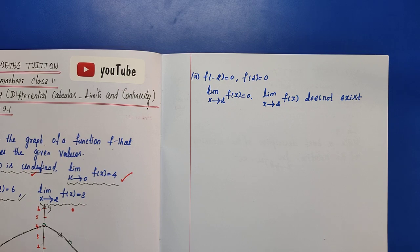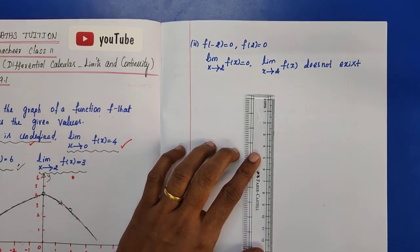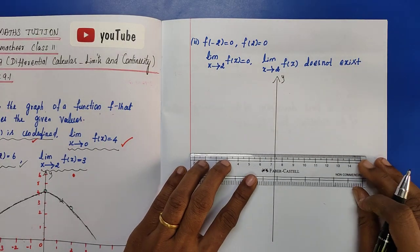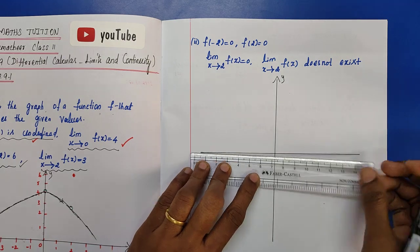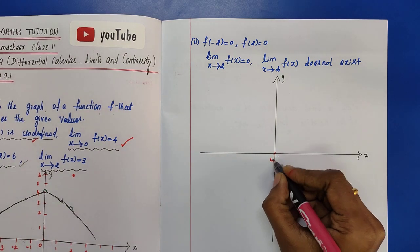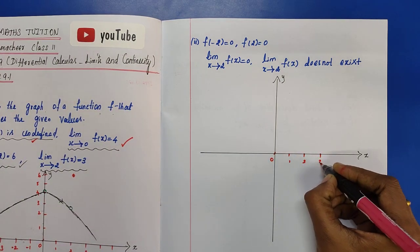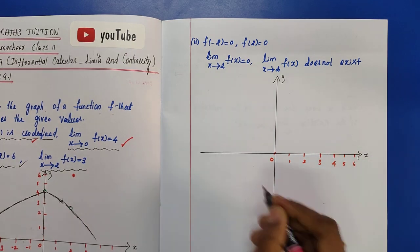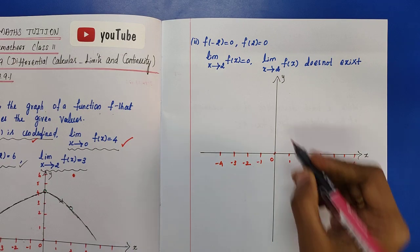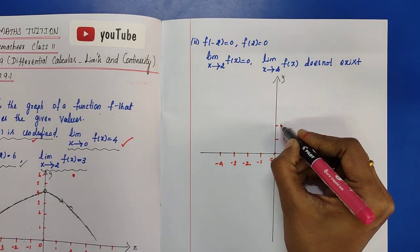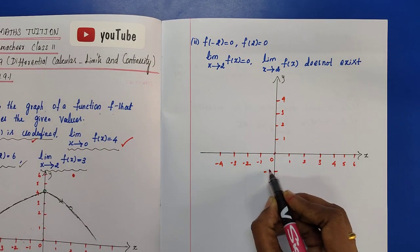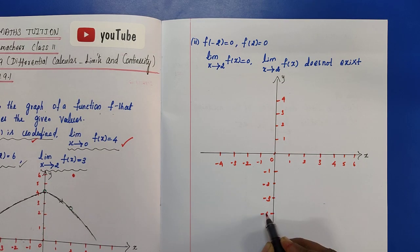Setting up the coordinate system: x-axis and y-axis. On the x-axis going rightward: 1, 2, 3, 4, 5. Going leftward from the origin: minus 1, minus 2, minus 3, minus 4. On the y-axis going upward: 1, 2, 3, 4, 5, 6. Going downward: minus 1, minus 2, minus 3, minus 4.